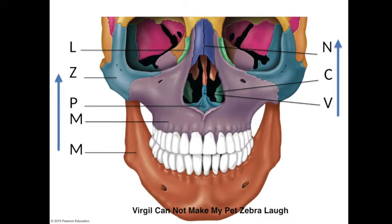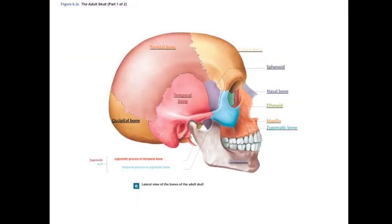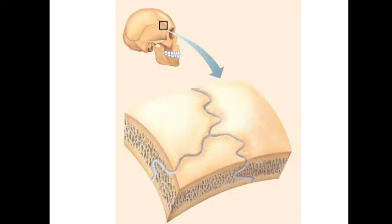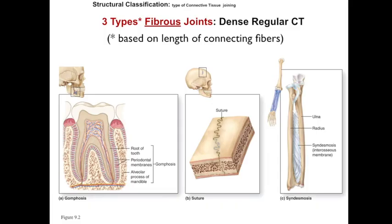These can be remembered by the mnemonic: Virgil cannot make my pet zebra laugh. And if you could think of a better one, please tell me. So once you learn the names of all these cranial and facial bones, you're going to start working on all the features of these bones. One of the features you're going to have to recognize is the sutures — the connections between these cranial flat bones and facial bones. Here I'm going to introduce the concept of articulations or joints. Anytime two bones join together, this is a joint, otherwise known as an articulation. These sutures are one of the three structural joints falling under the category of fibrous joints.